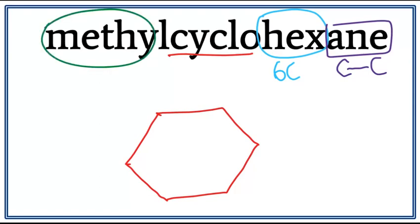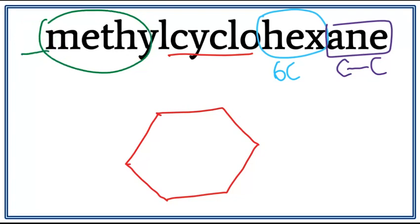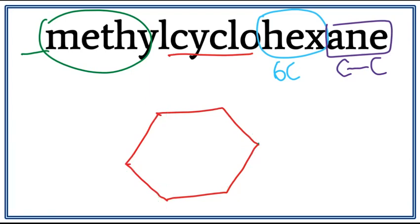We also have a methyl attached to this cyclohexane, and we don't see any number. When we don't see a number, this just means that the methyl is attached on the first carbon. We don't really need to number cyclohexane because any of these carbons can be the first carbon. We can attach our methyl anywhere on this ring. So let's attach the methyl here. This is the structure for methylcyclohexane.